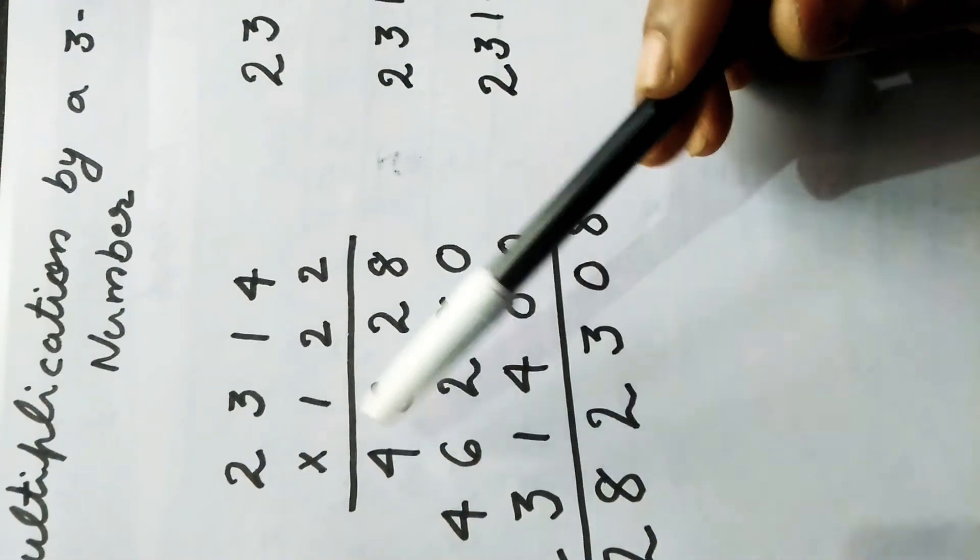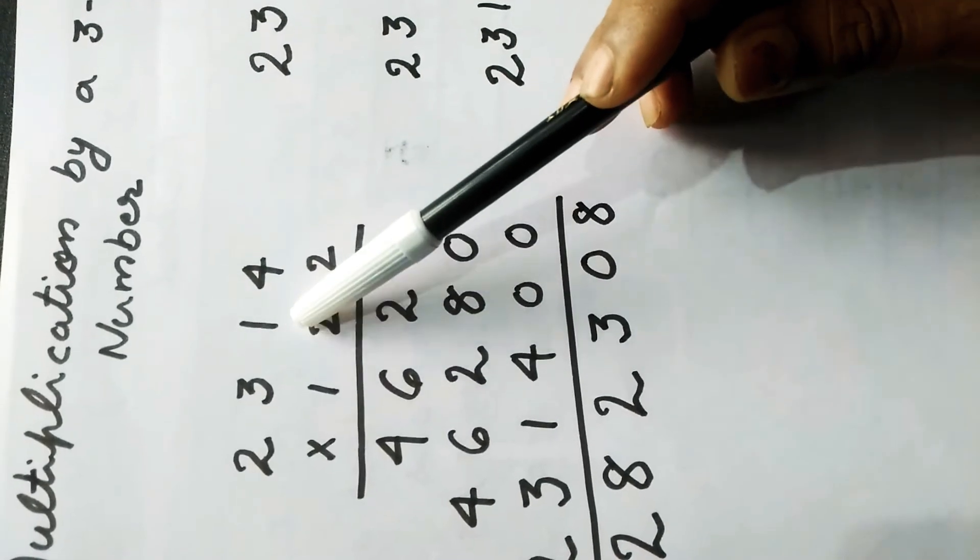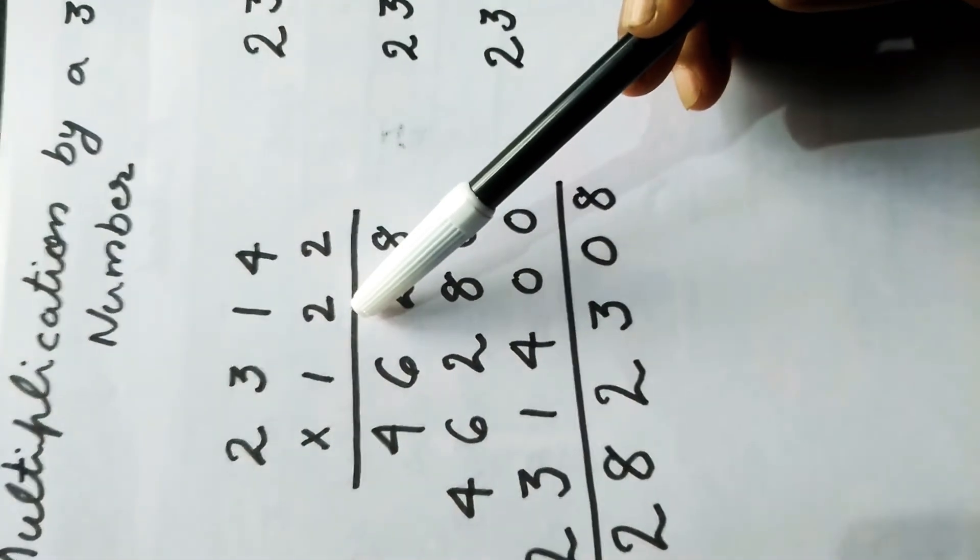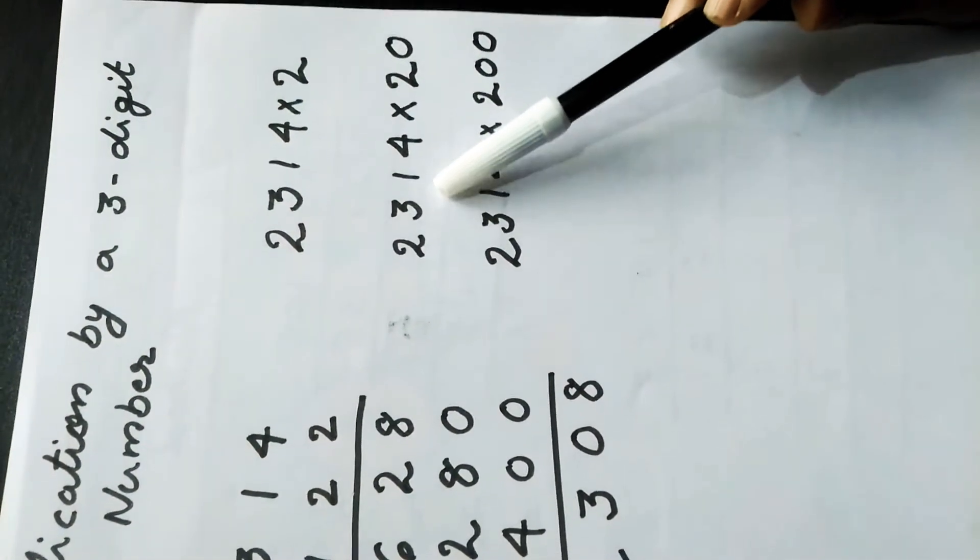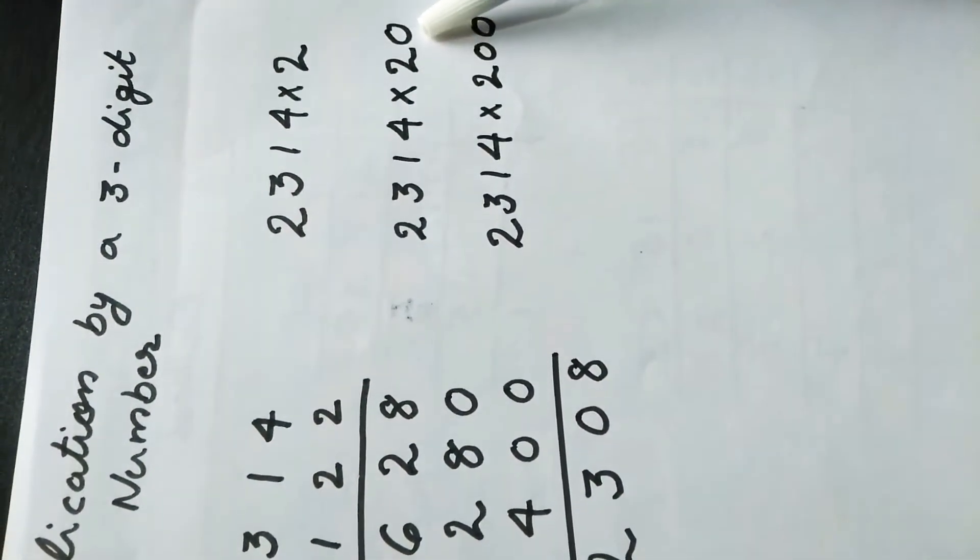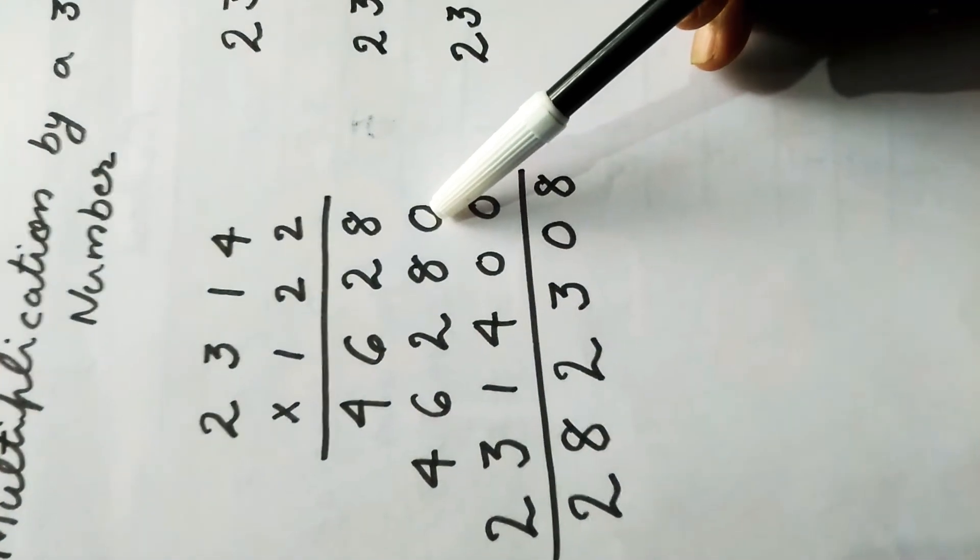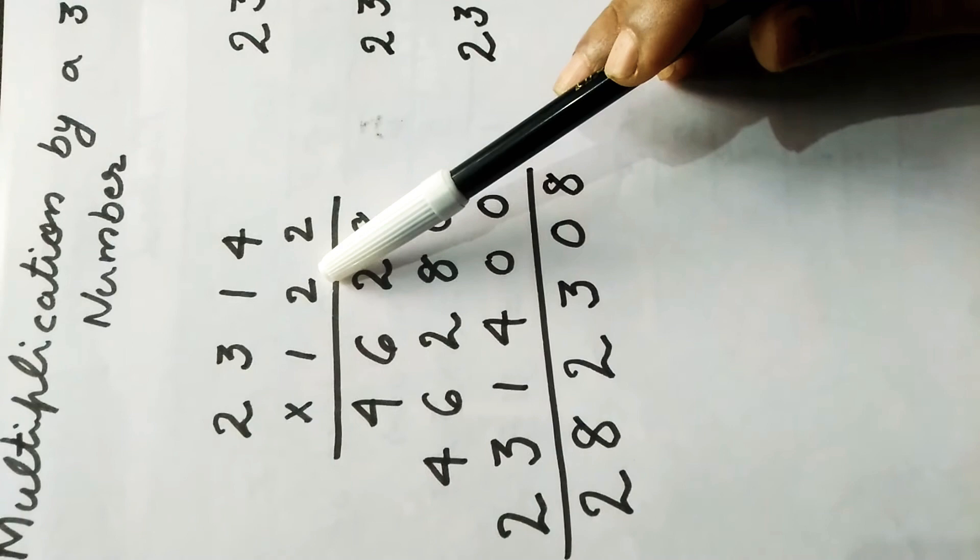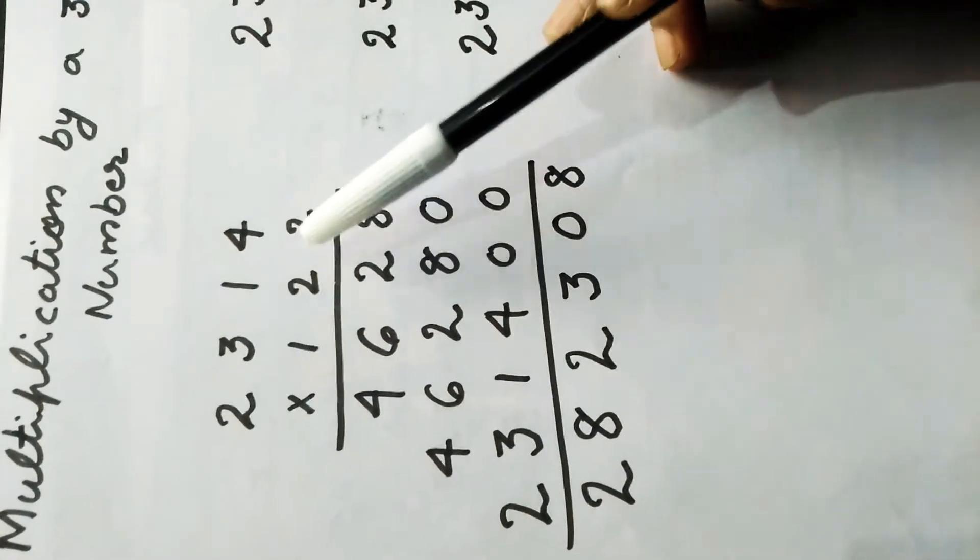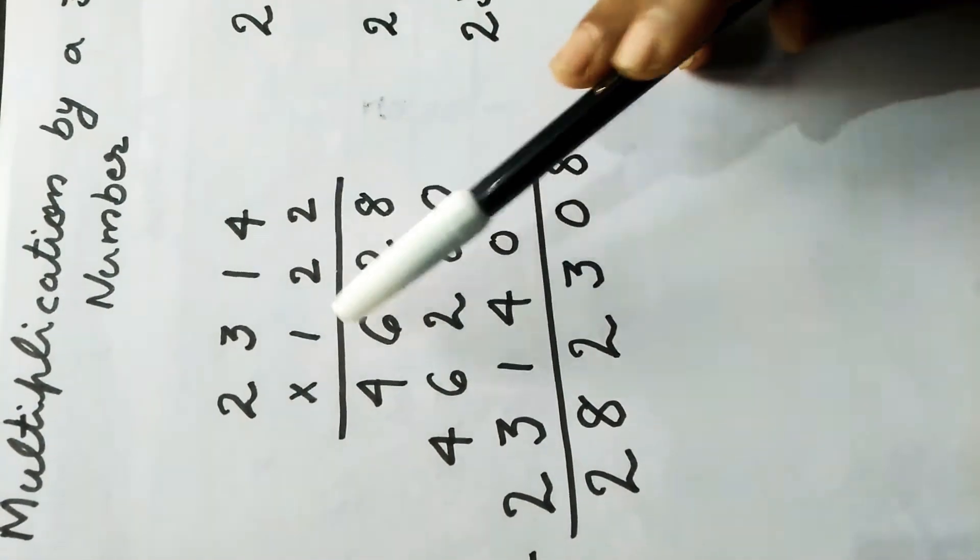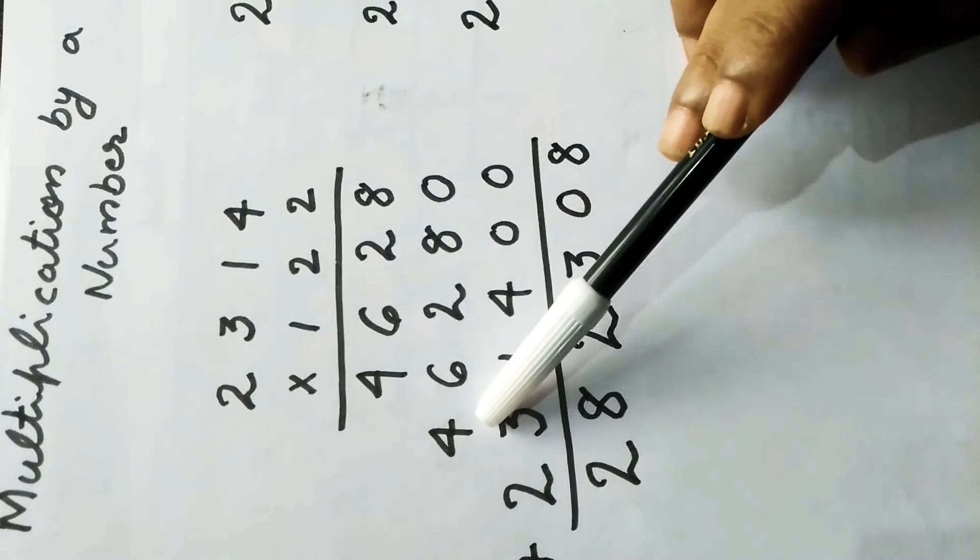Next we multiply 2,314 by the tens digit, that is 2 in the tens digit, that means 2,314 multiplied by 20. We put one zero in the ones place then multiply by 2. 2 fours are 8, 2 ones are 2, 2 threes are 6, 2 twos are 4.